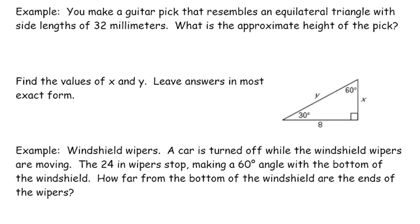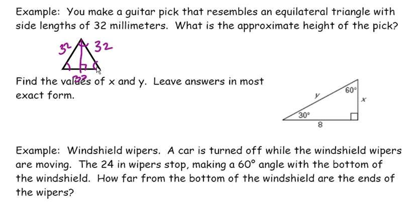So let's run through some examples. When you make a guitar pick that resembles an equilateral triangle with side lengths of 32 millimeters, what is the approximate height of the pick? If it's an equilateral triangle, then all the sides are congruent, and all of the angles are congruent. So we've got sides of 32, 32, 32, and we need to know the height. When I draw my altitude, this angle measures 60, this one measures 90, which means this one must measure 30. So I have a 30-60-90 right triangle, and my pattern is going to apply.